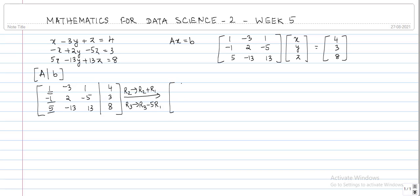The first row remains as it is. The second row is, you just have to add it to the first row, so minus 1 plus 1 is 0, 2 minus 3 is minus 1, minus 5 plus 1 is minus 4, and then 3 plus 4 is 7.